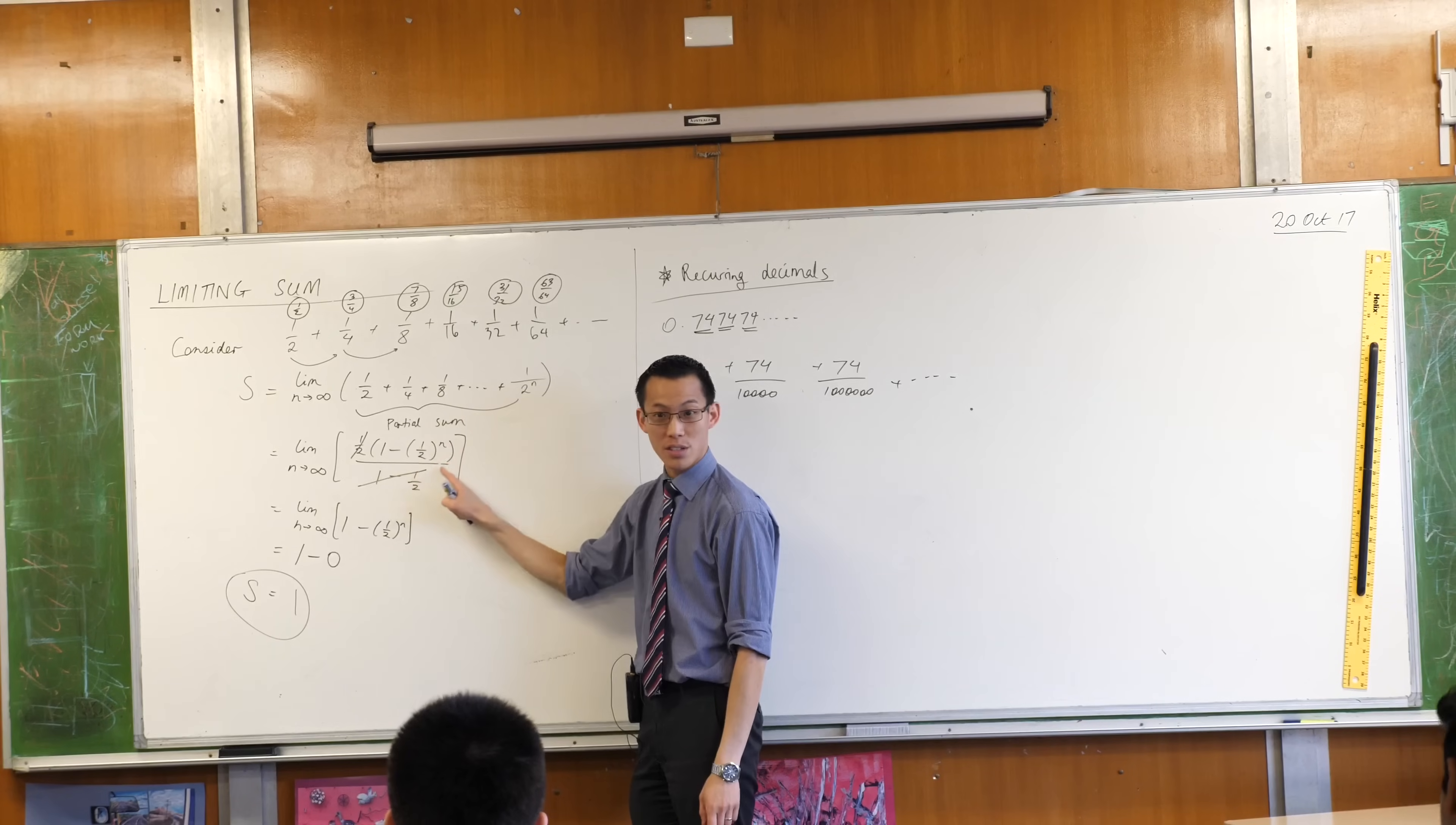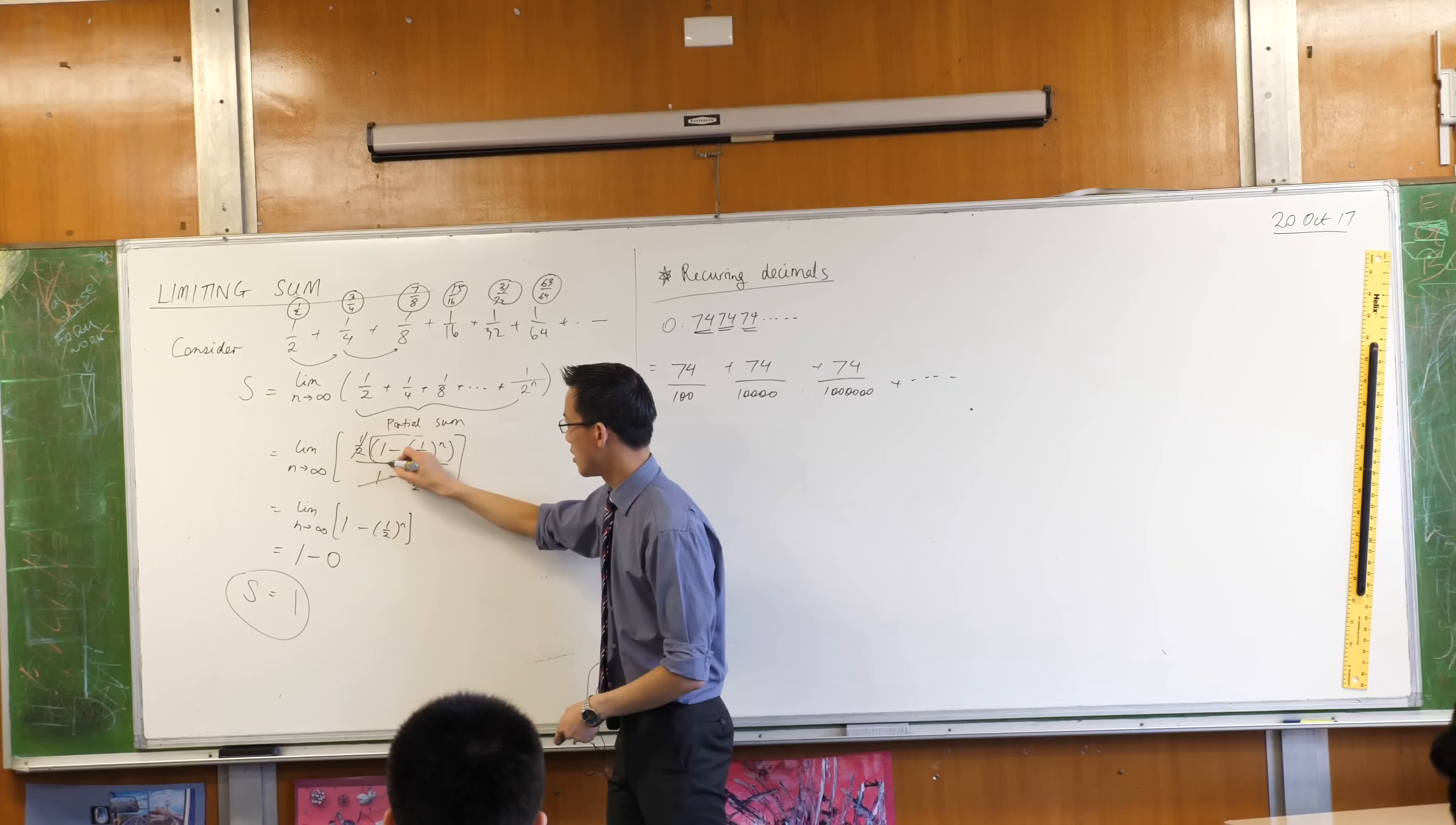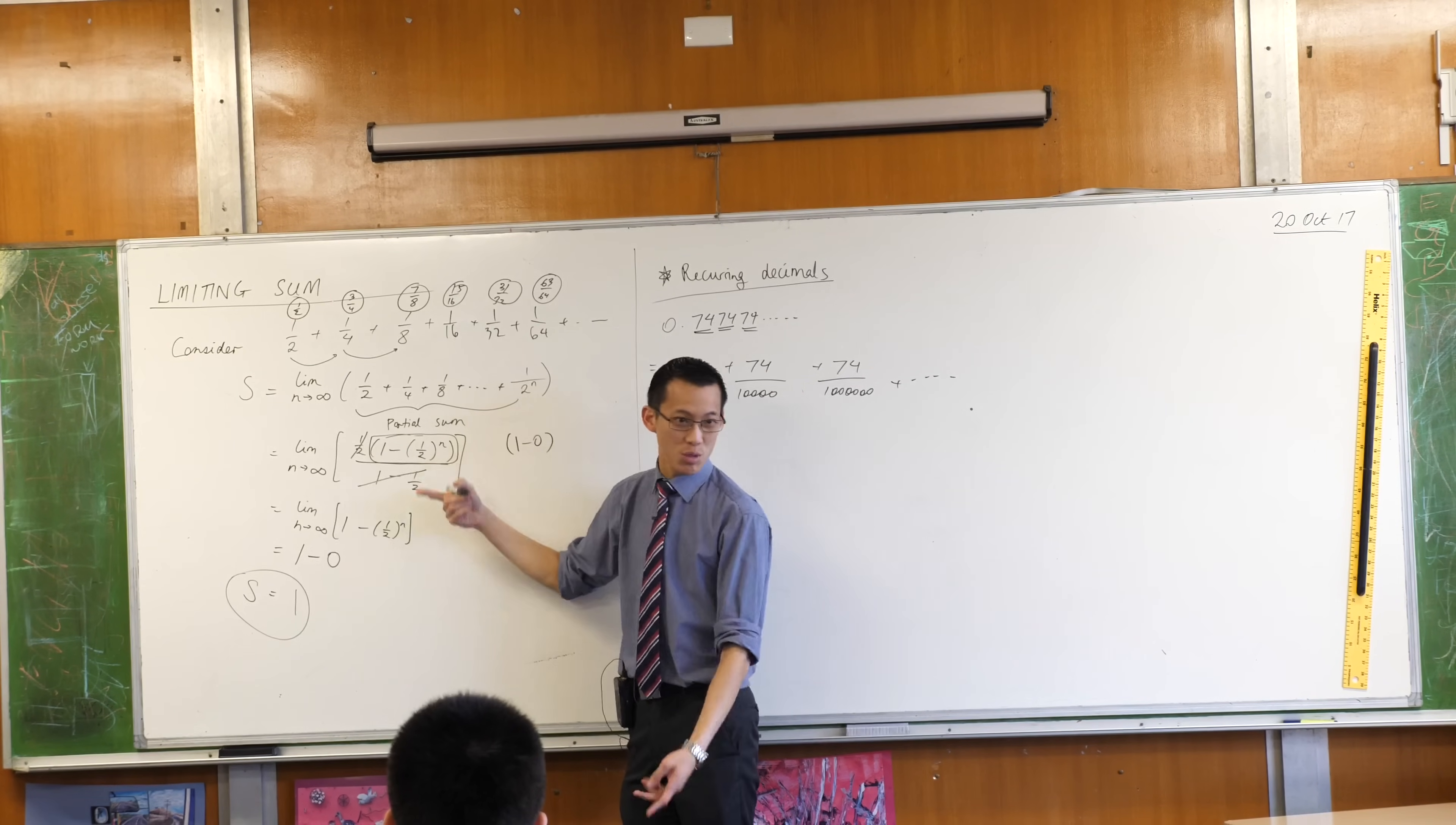So if that part always goes to 0, what happens to this whole bracket up here? If this always goes to 0, then that always goes to 1 minus 0. Do you see that? Which is just 1.